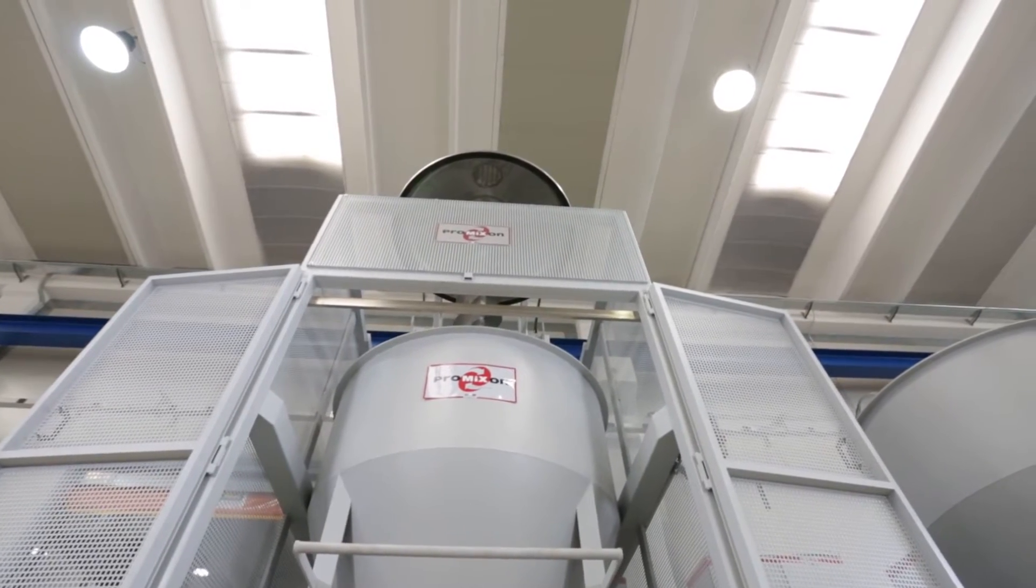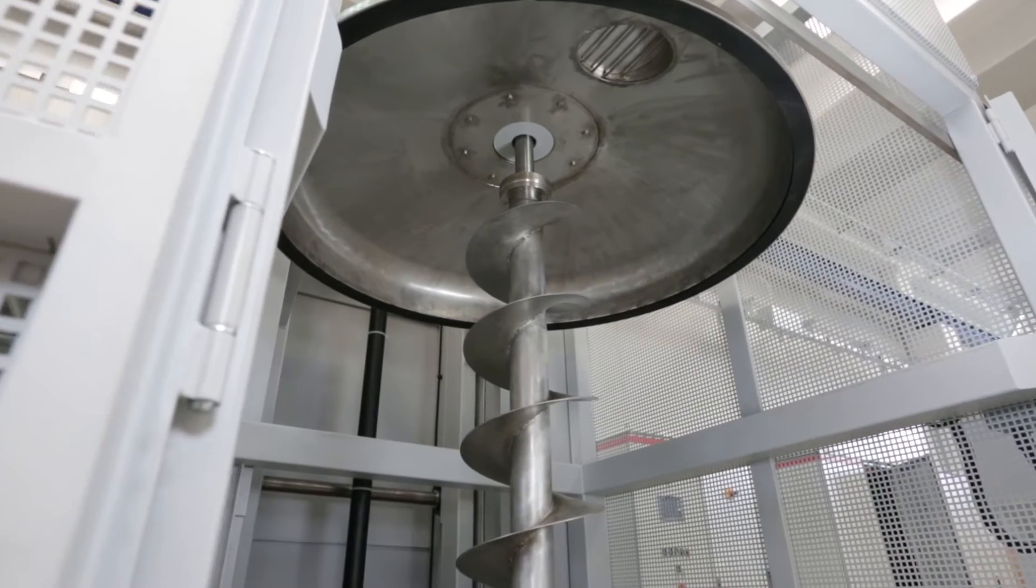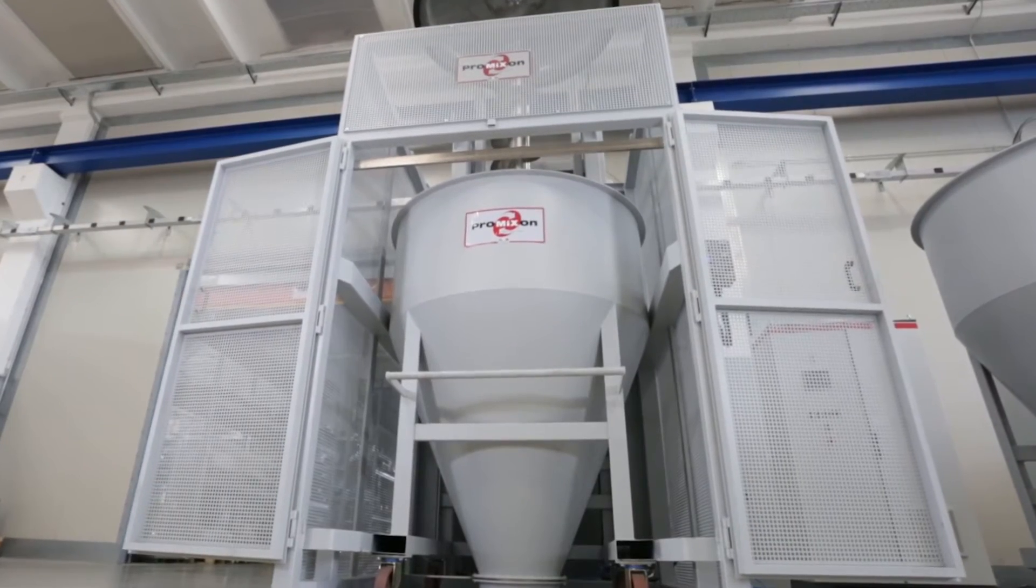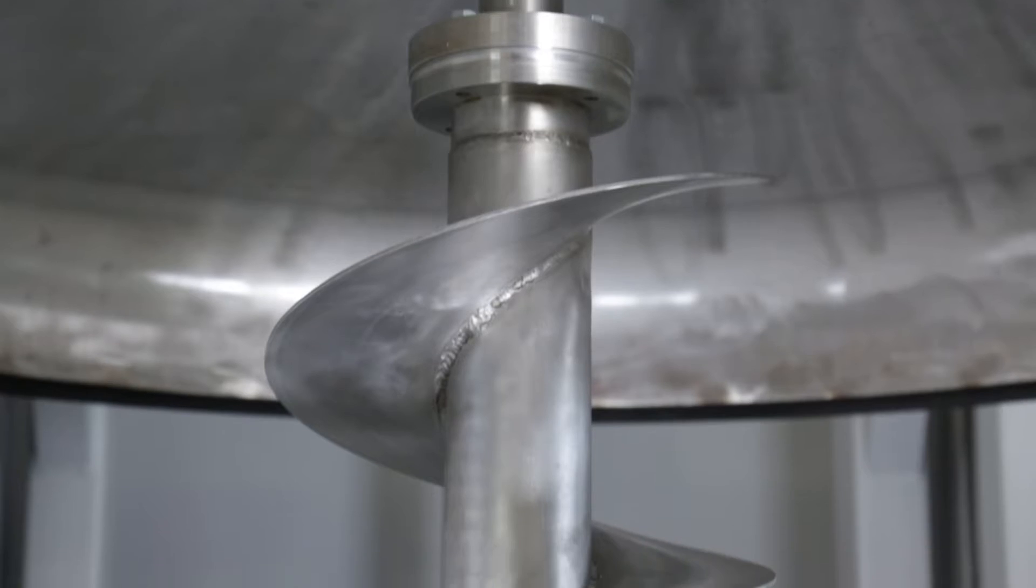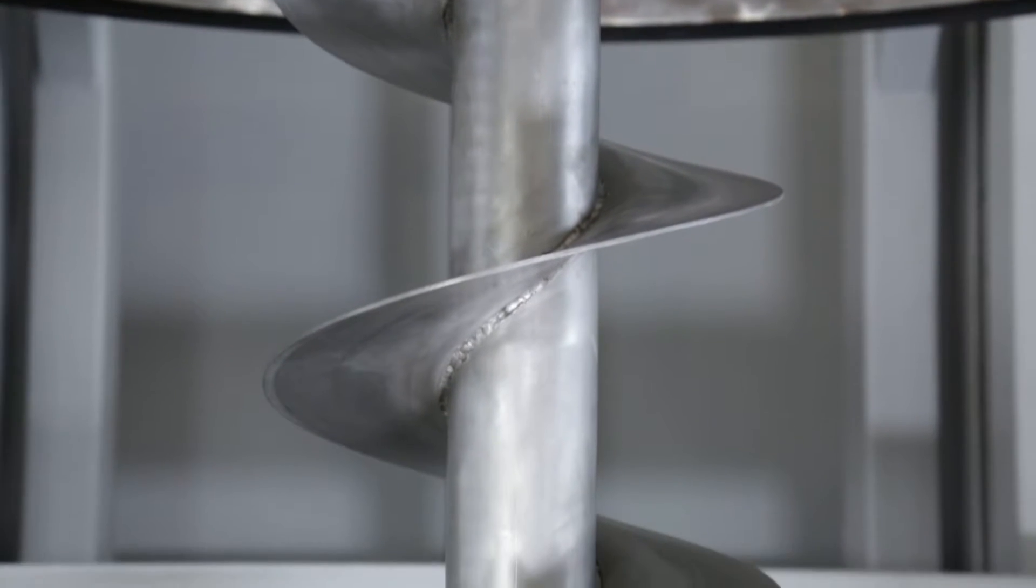ProMixon is proud to present PolyMix 2000, the vertical mixer ideal for pre-mixing powders with granules, granules with granules, and post-mixing granules in compound production lines for homogenization.